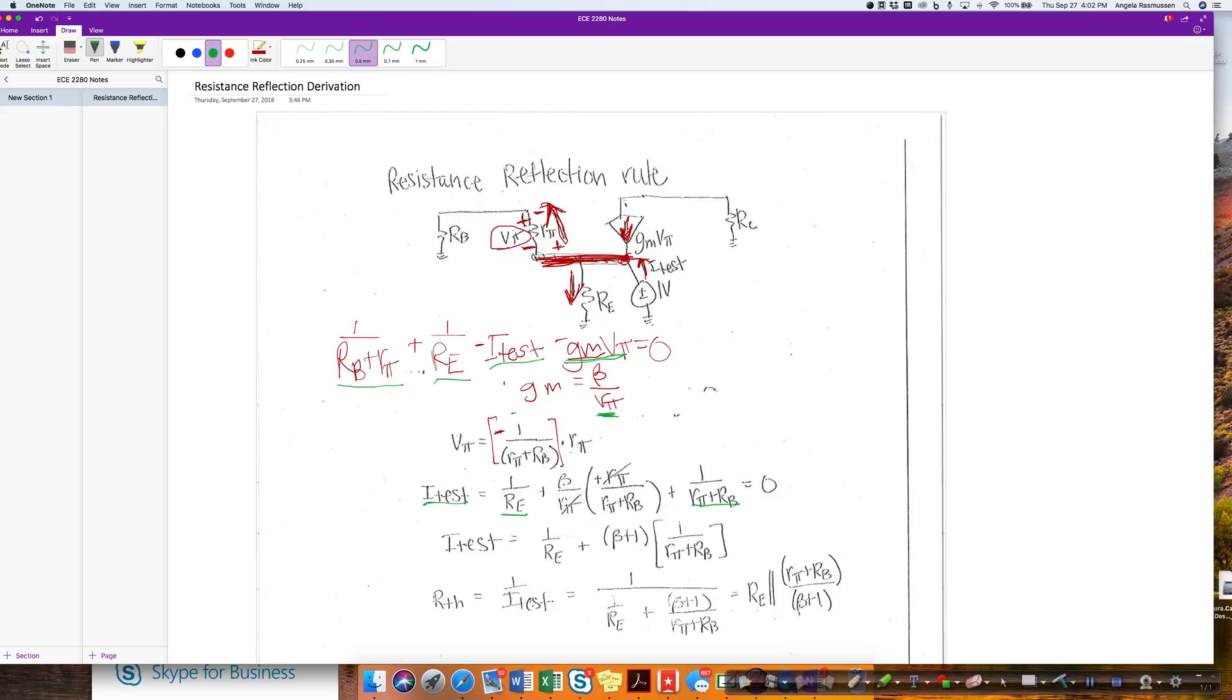And then for the minus gm vpi, I'm going to plug in the beta over rpi. So that is beta over rpi. And then I plugged in this quantity, which was rpi over rpi plus rb. I have a minus and a minus, and those cancel to give me a plus.